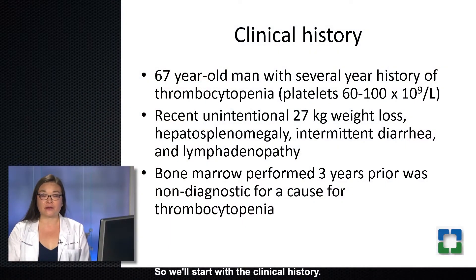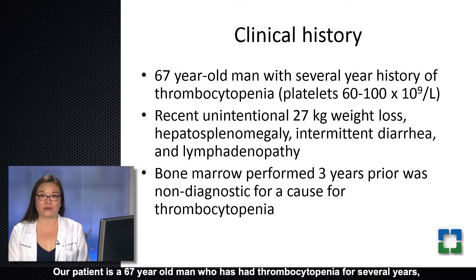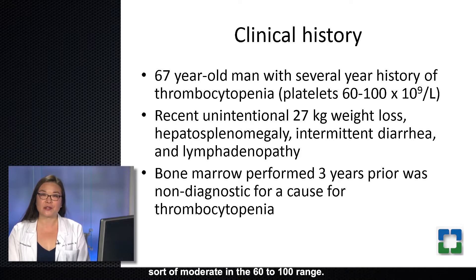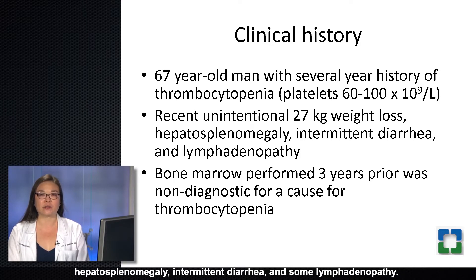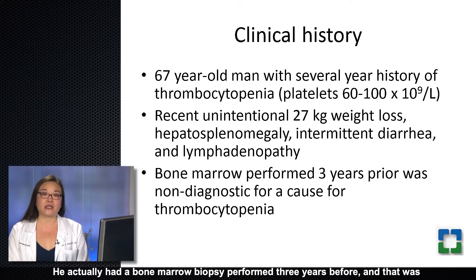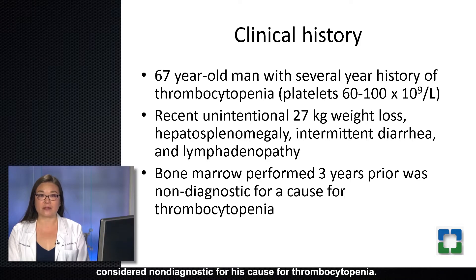We'll start with the clinical history. Our patient is a 67-year-old man who's had thrombocytopenia for several years, sort of moderate in the 60 to 100 range. He also recently had an unintentional 27-kilogram weight loss, and he has hepatosplenomegaly, intermittent diarrhea, and some lymphadenopathy. He actually had a bone marrow biopsy performed three years before, and that was considered non-diagnostic for his cause of thrombocytopenia.